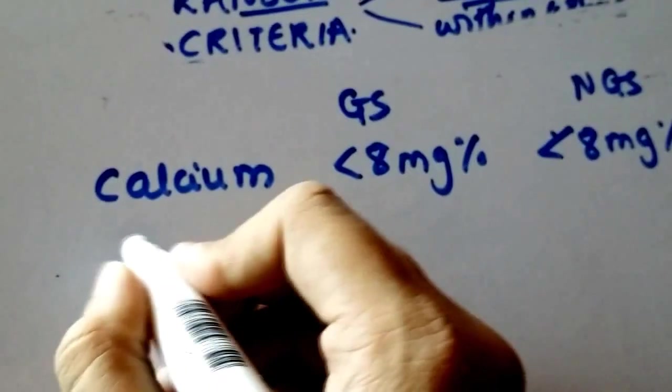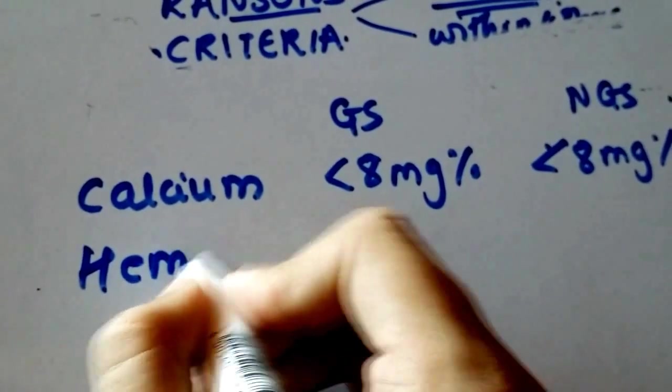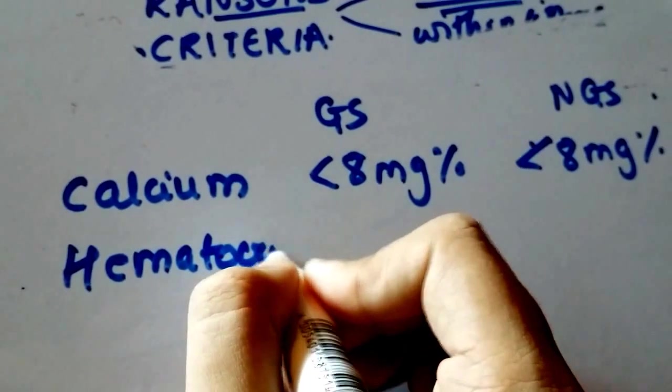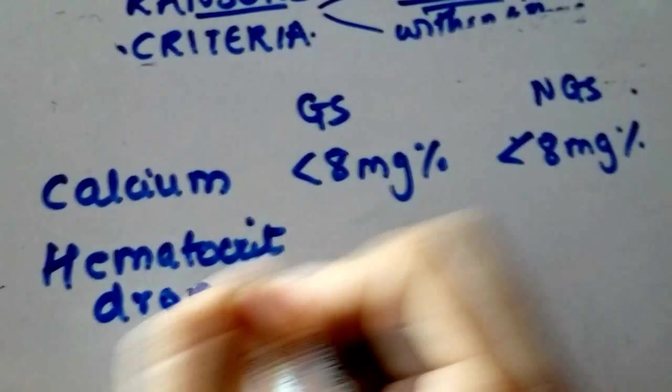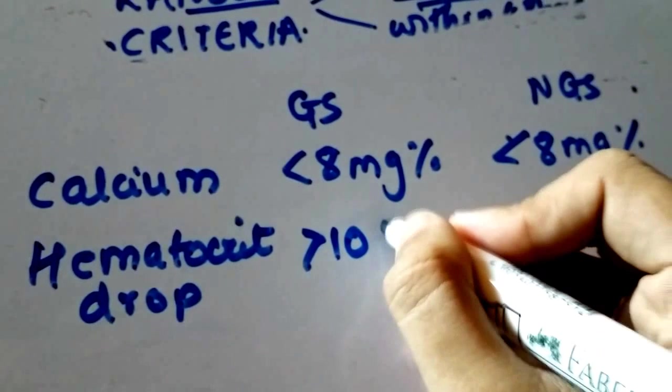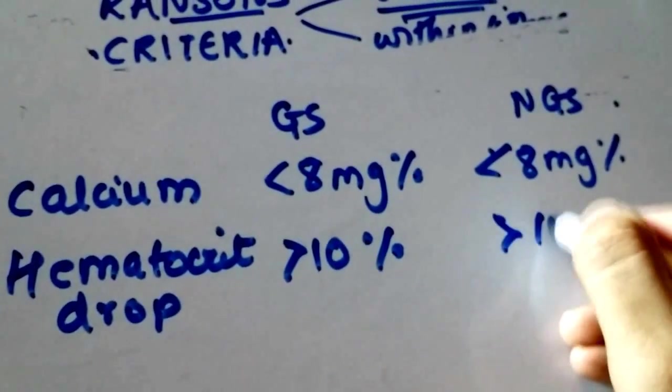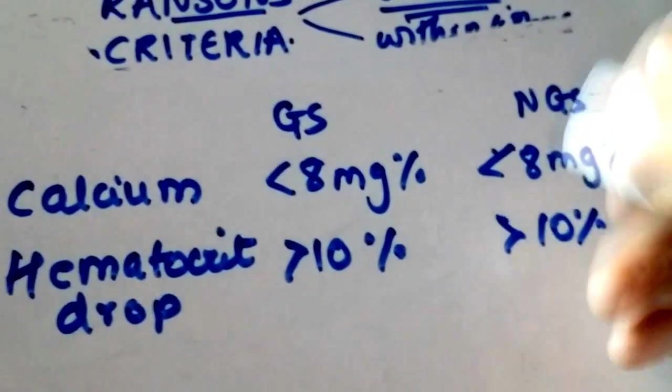H stands for hematocrit drop. And if it's greater than 10 percent, it's the same for non-gallstone criteria as well.